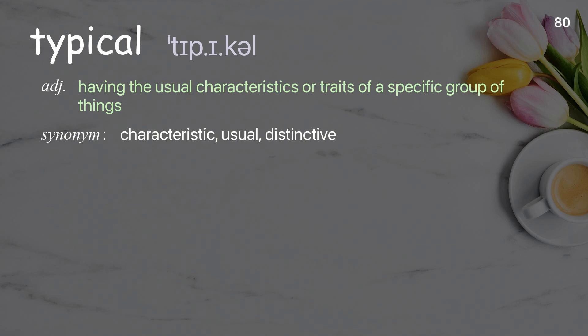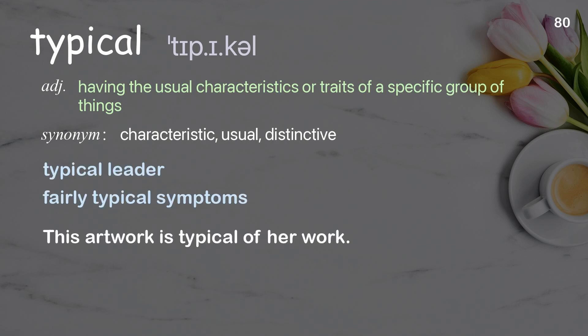Typical: Having the usual characteristics or traits of a specific group of things. Examples: Typical leader, Fairly typical symptoms. This artwork is typical of her work.